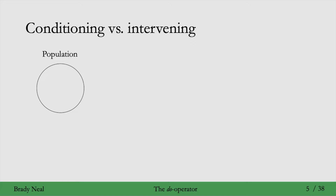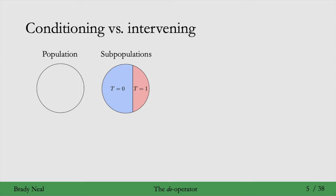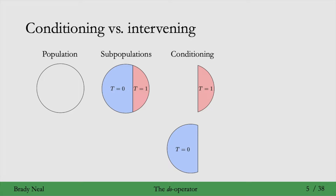If this is the population in this circle here, and these are two subpopulations where t equals 0 are the people who didn't take the treatment, and t equals 1 are the people who did take the treatment, then conditioning looks like this. If we were to condition on t equals 1, we get this red subset on the top here, and if we condition on t equals 0, we get this blue subset on the bottom here. Importantly, conditioning means that we're just restricting the data to a specific subset of the data.